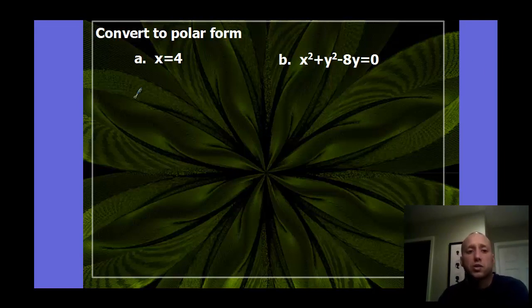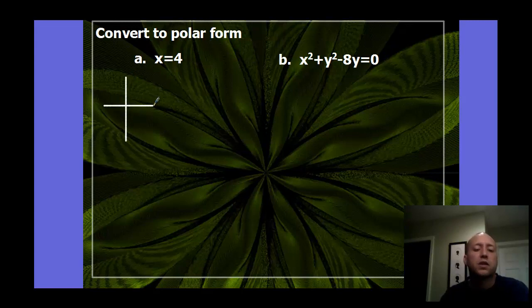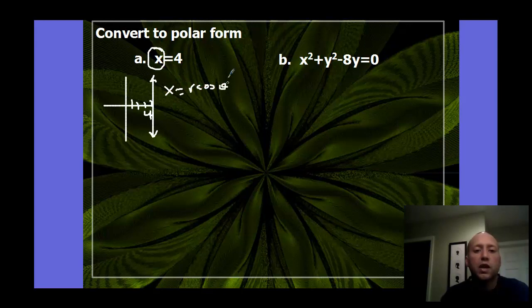Now I want to convert some more equations. So convert to polar form. Here is once a rectangular form. If I graph this equation, x equals 4, as a vertical line through 4. So that would be that vertical line. If we want to convert that to polar, well, we have a formula for x. We know that x equals r cosine theta. So let's substitute that in for x. If we do that, you get r cosine theta equals 4.